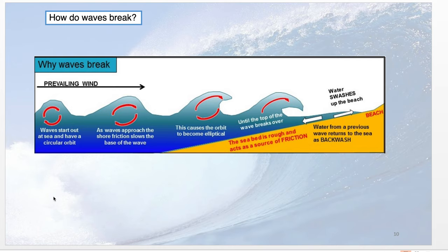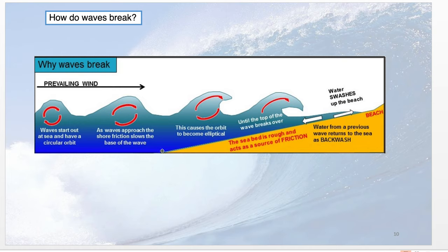Here's another graphic of waves breaking. We see the prevailing wind blowing waves towards the shore, and the circular orbit of water out at sea. As we get towards the shore, the orbit of the wave becomes more elliptical. The wave base experiences friction on the bottom, which makes that orbit more elliptical, and eventually the wave breaks.